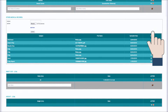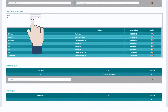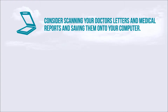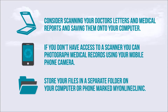Any medical records you have on file can be scanned and uploaded to My History. It's good practice to store your medical information in one place. Consider scanning your doctor's letters and medical reports and saving them onto your computer. If you don't have access to a scanner, you can photograph medical records using your mobile phone camera. Store your files in a separate folder on your computer or phone marked My Online Clinic. This will make it easier to access your files and upload them to My History.